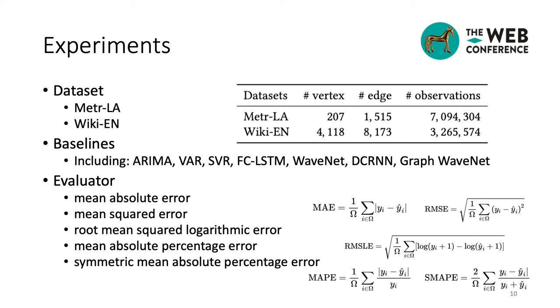We compare the REST framework with seven representative approaches, including Autoregressive Integrated Moving Average Model, Vector Autoregression Model, Support Vector Regression Model, Fully Connected Long Short-Term Memory Model, WaveNet, Diffusion Convolutional Recurrent Neural Networks, and Graph WaveNet. To evaluate the performance of all the included models, we introduce five metrics, including mean absolute error, mean squared error, root mean squared logarithmic error, mean absolute percentage error, and symmetric mean absolute percentage error.